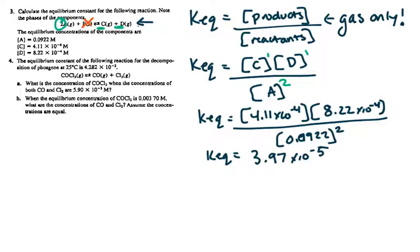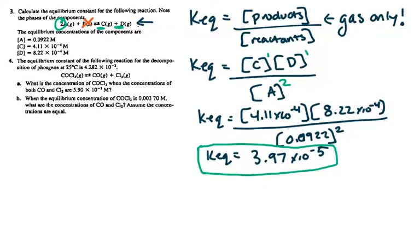If you are actually calculating the constant, the constant doesn't have units — just the concentrations do. So if you were calculating a concentration — A, B, C, or D — your units would be molarity, which is capital M. You could write moles per liter. Either of those are acceptable. Even putting it in brackets is acceptable because brackets mean concentration. K_eq doesn't have a unit. So that would be your final answer for number 3.